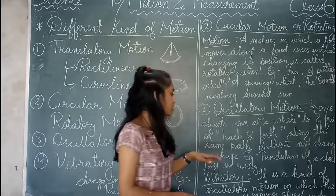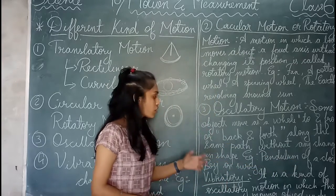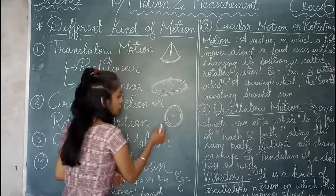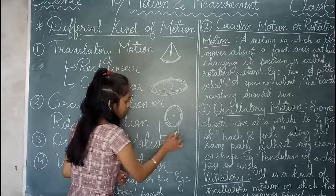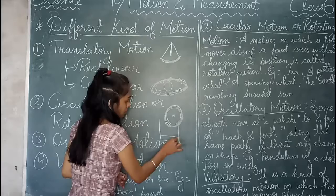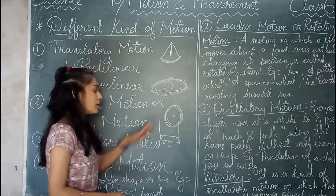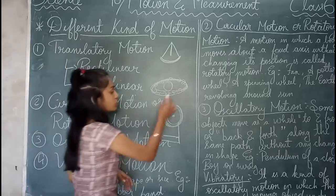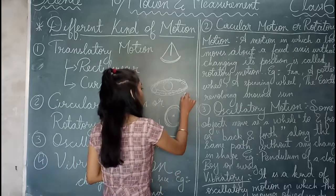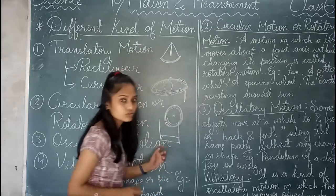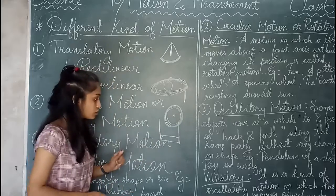With the same example, we understand that the pendulum of a clock shows oscillatory motion. A swing is another example of oscillatory motion. Another example is the needle in a sewing machine — the needle moves up and down, which is also oscillatory motion.